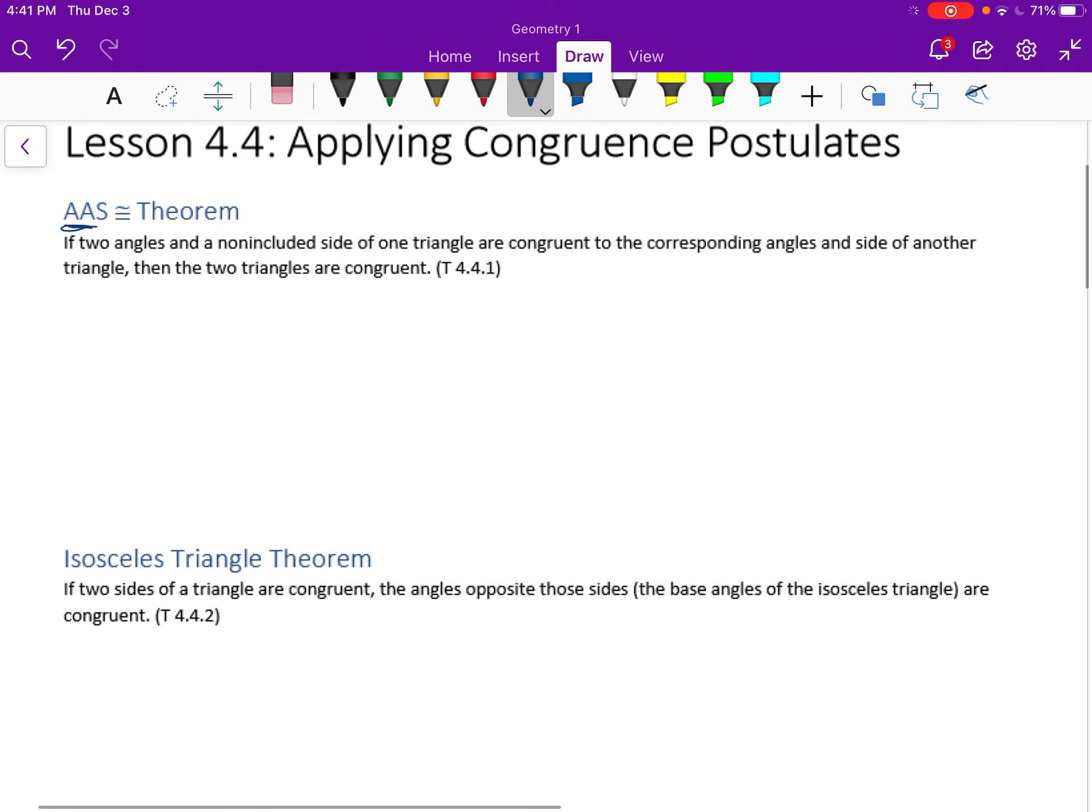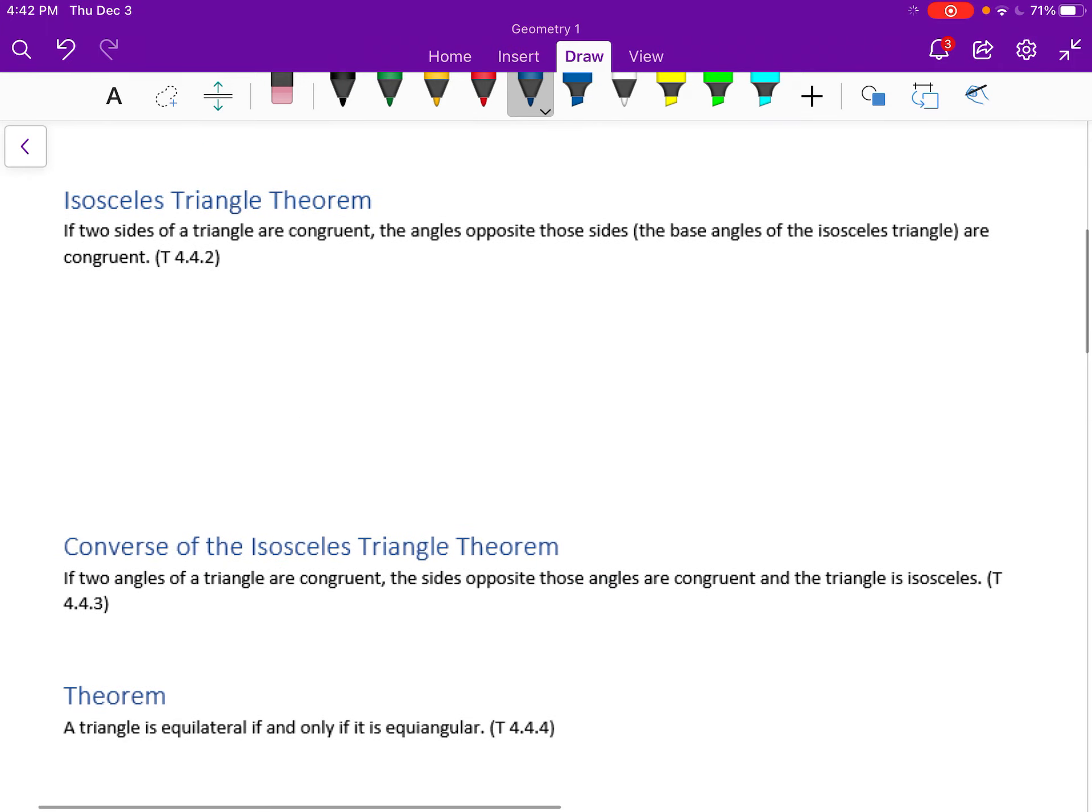But we're going to jump into some of these other ones that are practical in the sense that we're not just proving a theorem, but we're going to use it to find measures of angles or describe different types of triangles. So the isosceles triangle theorem is a pretty important, well-known theorem in geometry. It says if two sides of a triangle are congruent, in other words, if it's an isosceles triangle, the angles opposite those sides, those are called the base angles, are congruent.